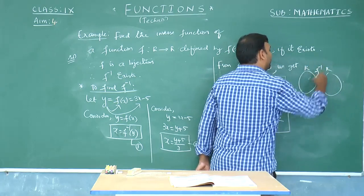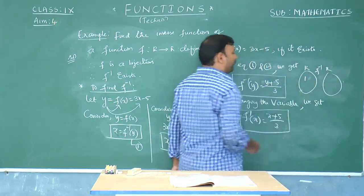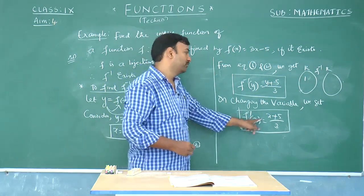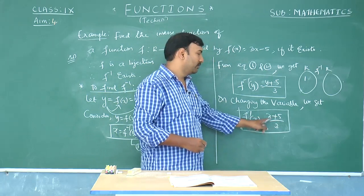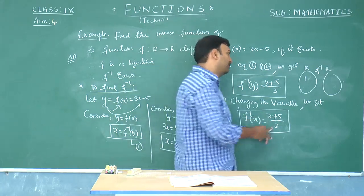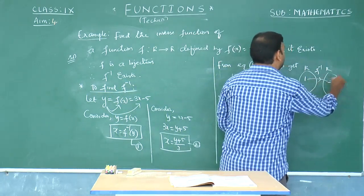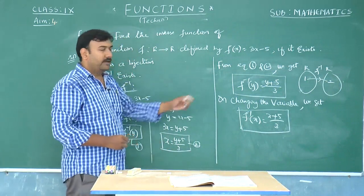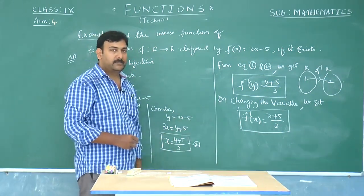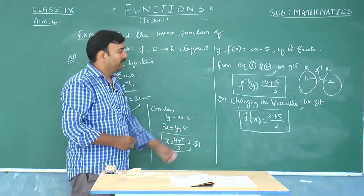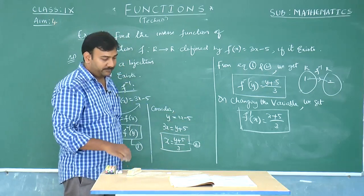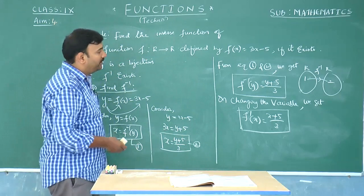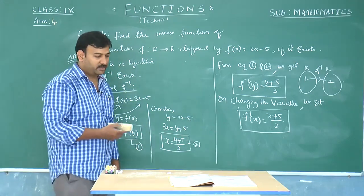Under the function f inverse, if you want to find the image of 1, the image of 1 is given by f inverse of 1 = (1 + 5)/3 = 6/3 = 2. So this formula will help us in finding the image of any particular element in the function f inverse. Here we have seen an example problem of how to find the inverse function of a given function.